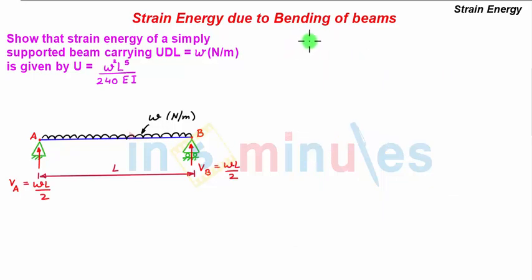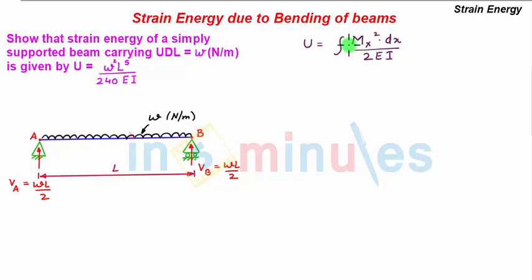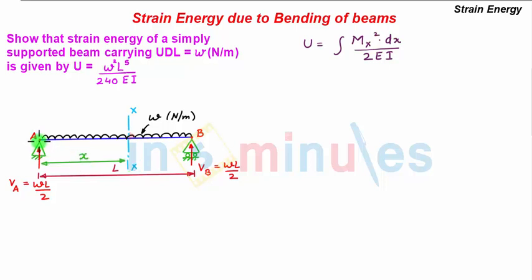Strain energy in beams is given as U = ∫Mx² dx / 2EI, where Mx is the bending moment about any section. For a simply supported beam, the bending moment varies all along the span. Let us consider a section XX at a distance x from point A and determine the bending moment about this section XX, which can be used in this equation.